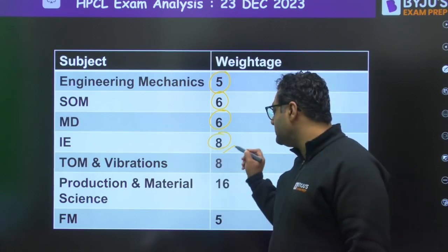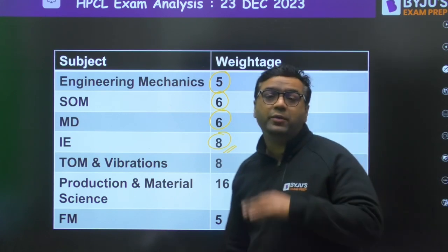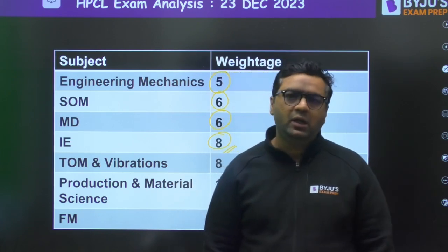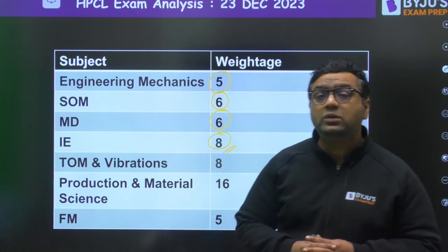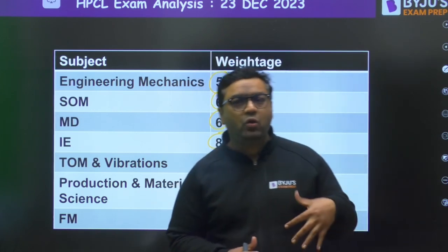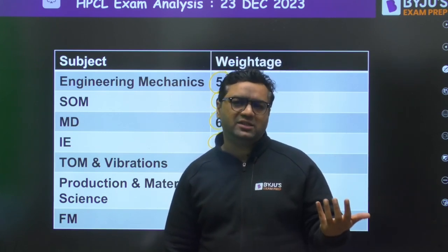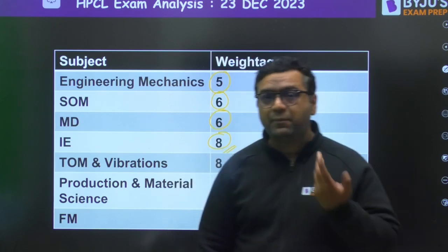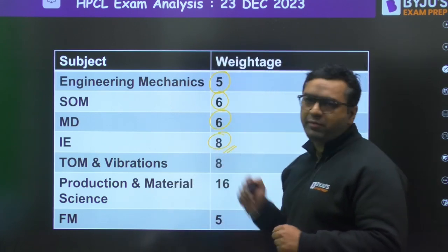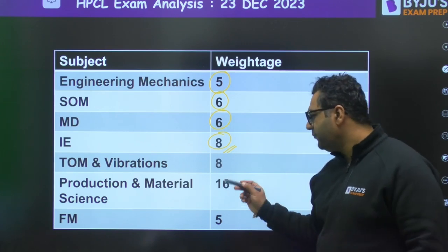In Industrial Engineering, there is surprisingly high weightage. Questions were asked from Economic Order Quantity, Queuing Theory, and Lean Manufacturing. Generally in PSU and ISRO papers, Industrial Engineering carries lesser weightage, but this year was a surprise — eight questions were there from Industrial Engineering.